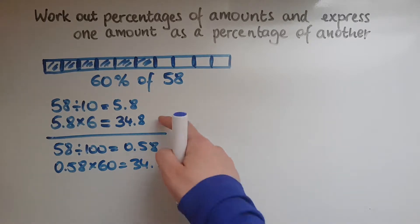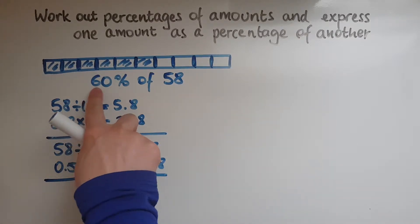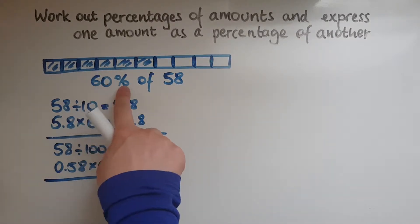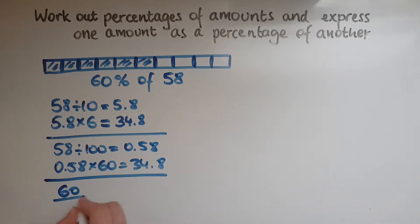So it gives us the same answer. Now, another way of working it out, would be to go, right, 60%. I want to work out 60%. So 60% means 60 out of 100. So I've got 60 out of 100 of 58. So of means multiplication.